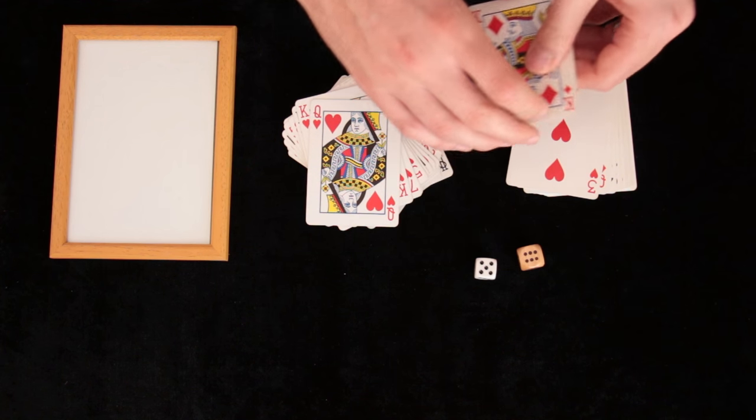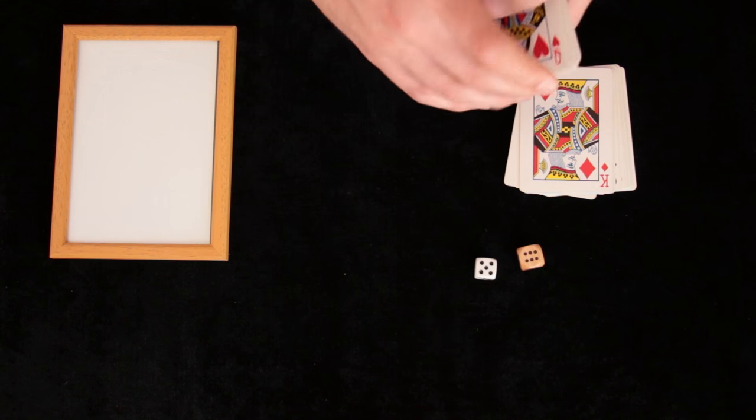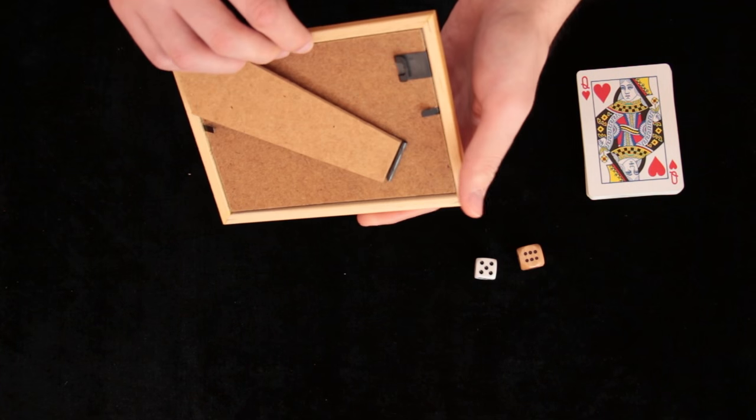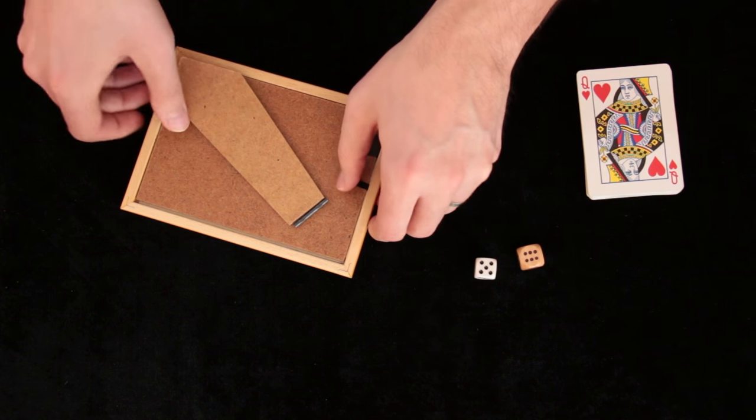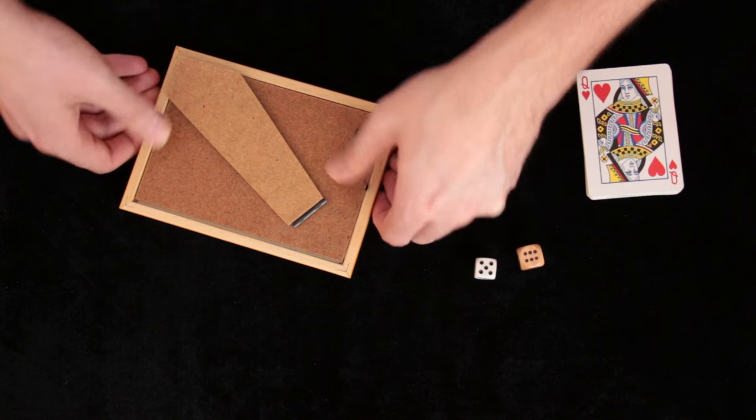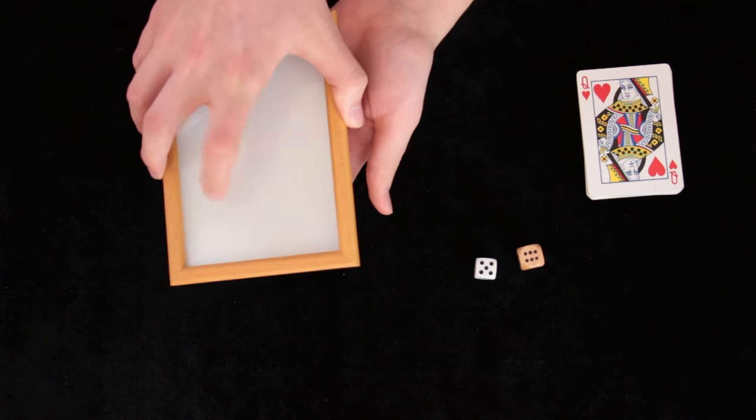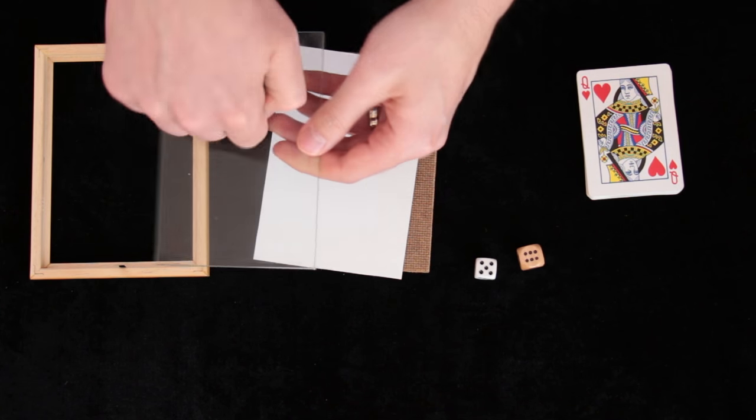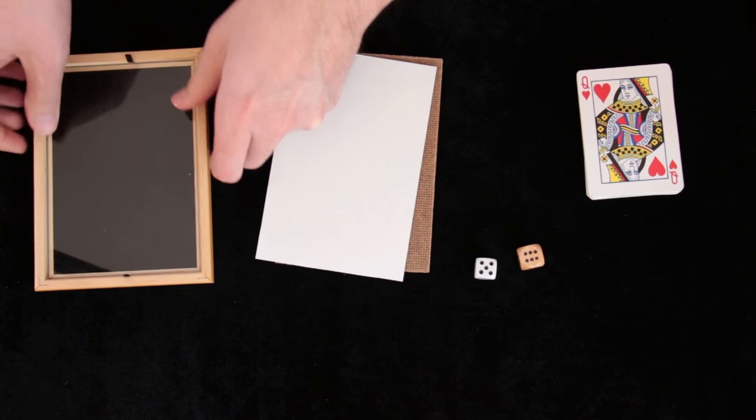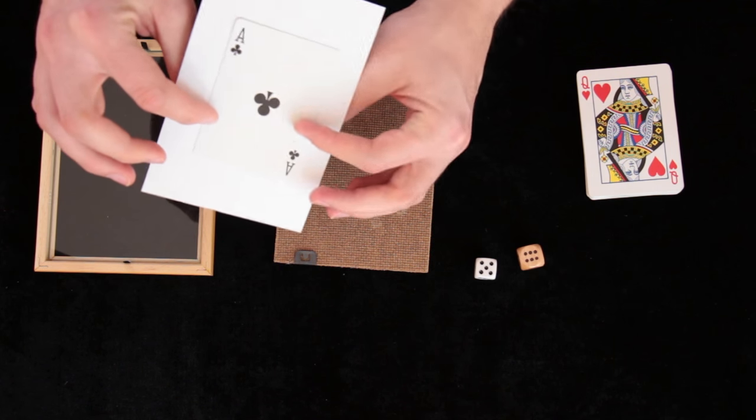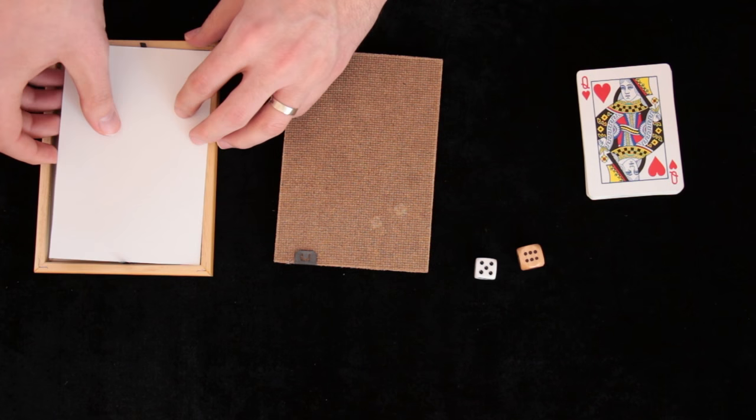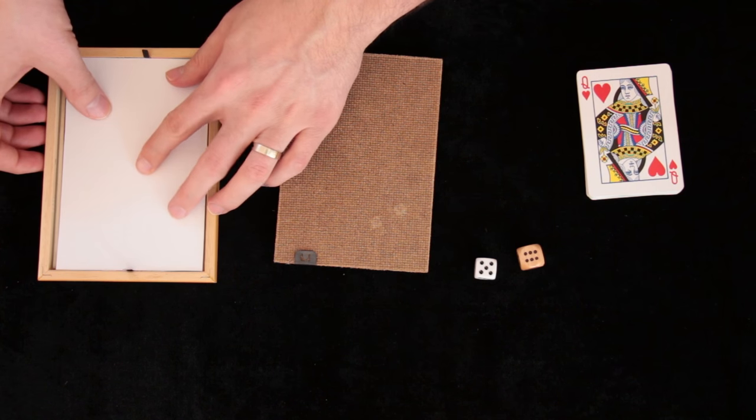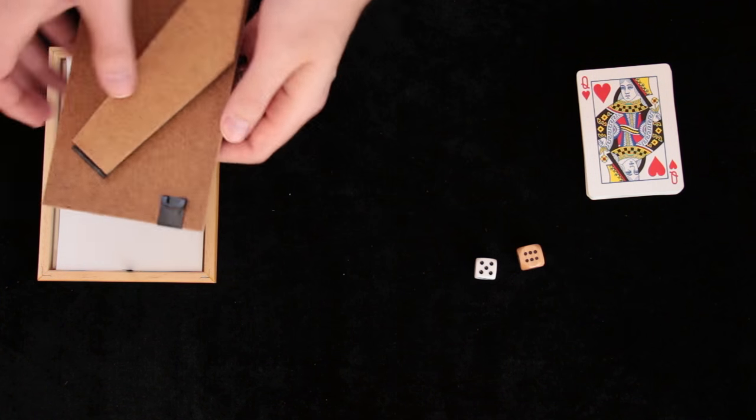Then the rest of the trick depends on showing the picture frame in a way that you will never show the card that is hidden inside. So you will unlock it, you will then show the frame, show the glass, then show the piece of paper, not show it from this side and then attach the back.